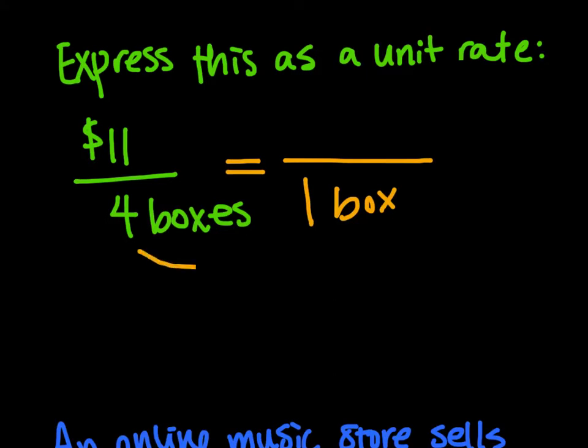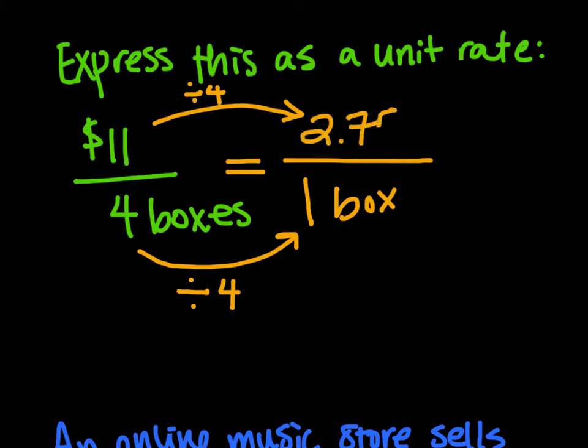The only way we can turn 4 into 1 is if we divide by 4. And whatever we do to the bottom, we need to do the top. So we're going to divide by 4. 11 divided by 4 is $2.75. So 1 box of cereal costs $2.75. Simple enough.